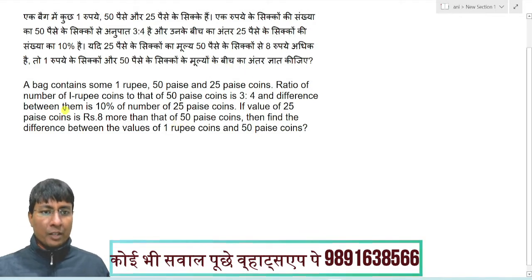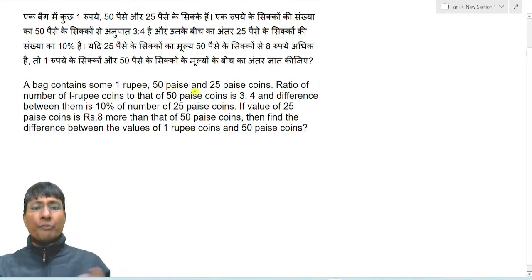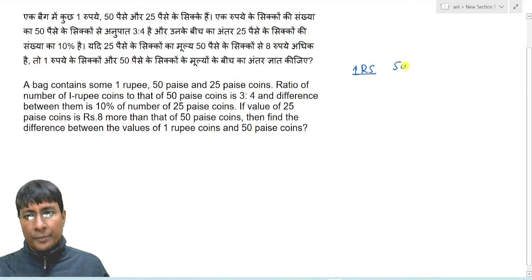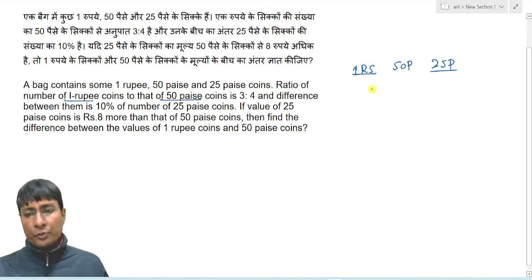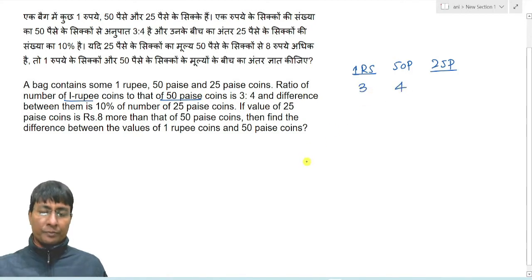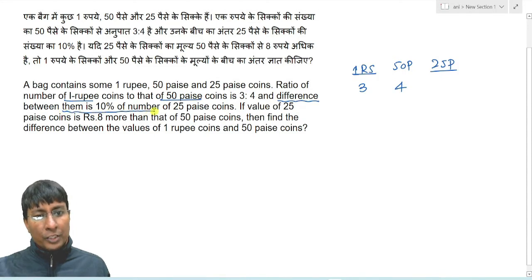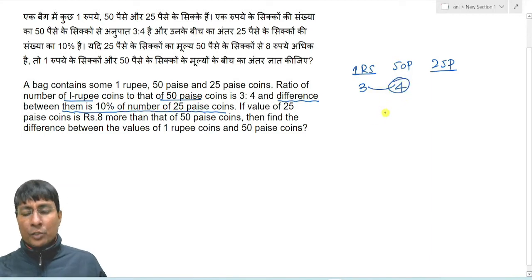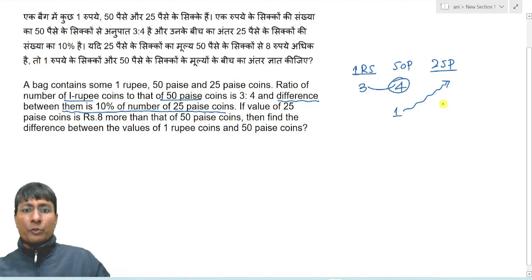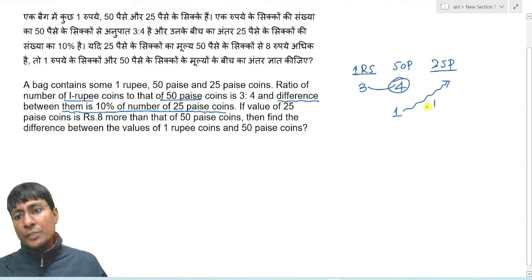This problem is easy to solve. First, note down the given information: one rupee coin to 50 paise coin ratio is 3 to 4. The difference between them is 10 percent of the 25 paise coins. Since the larger number is 50 paise coins, the difference of one unit equals 1/10 of the total 25 paise coins.